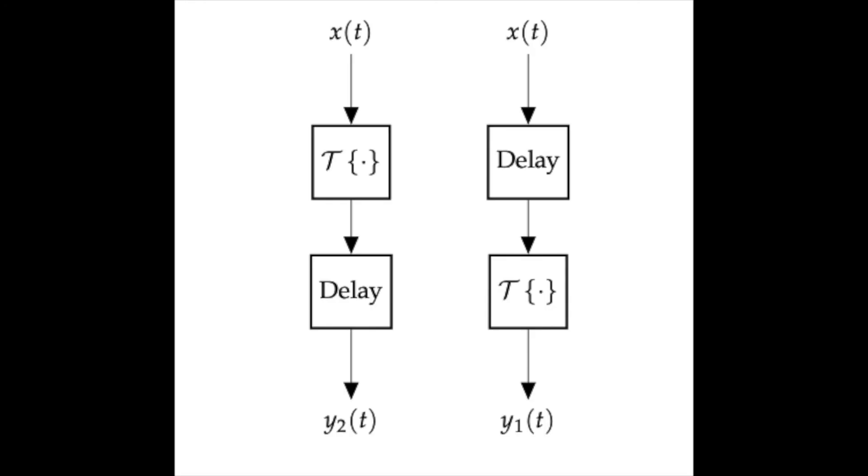Here is the test of time-invariance shown in diagram form. In order for the system to be time-invariant, y1 should equal y2 for all possible values of the time-shift tau and input signal x of t.